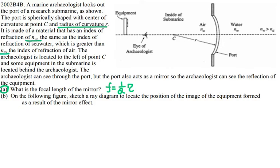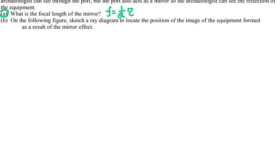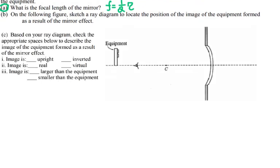For the second question, they ask you to sketch a ray diagram to locate the image of the equipment formed as a result of the mirror effect. They provide the mirror and the image of the equipment and want you to use ray diagram rules to find where the image is located. First, I need to figure out where the focal point is — if this is the center, the focal point is going to be right in between the mirror and the center of curvature.